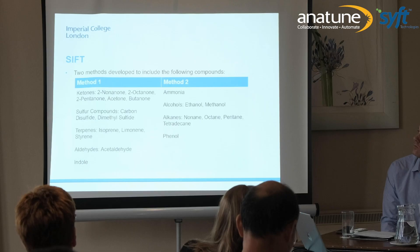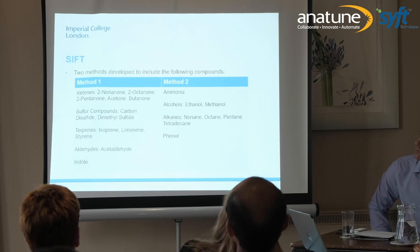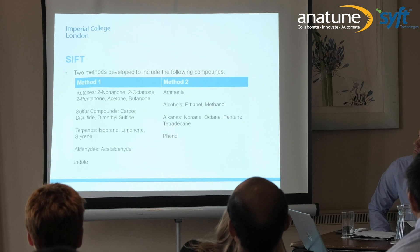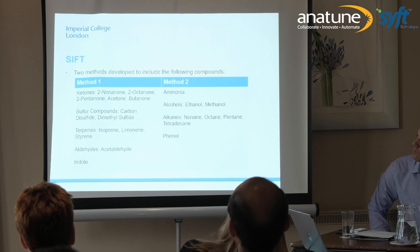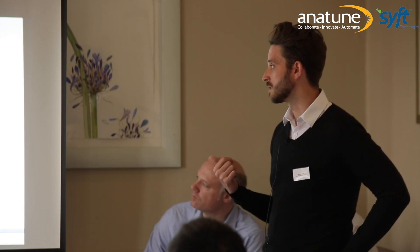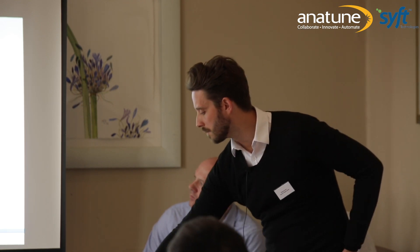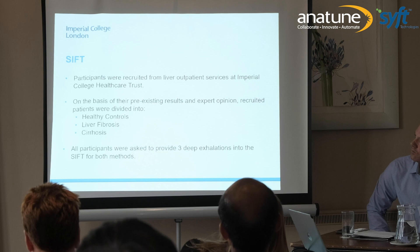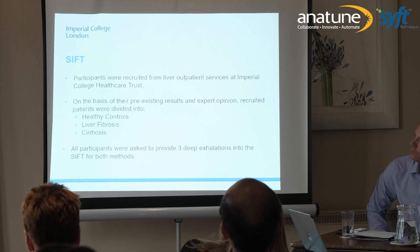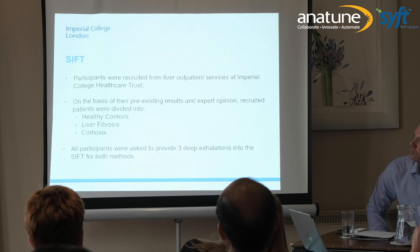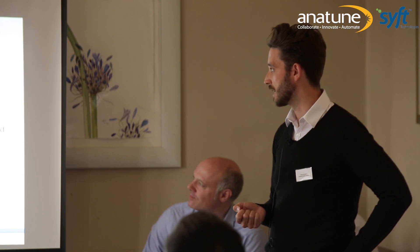In our lab at Imperial College, we developed two methods looking at the compounds previously identified in the literature as being different in patients with liver disease: ketones, sulfur compounds, terpenes, aldehydes, ammonia, alcohols, alkanes, and phenol — put together in two complementary methods. We then recruited patients from the liver outpatient services at Imperial College London. We're very fortunate that the liver unit is literally next door to our laboratory, so getting patients in to use the SIFT has been very easy.